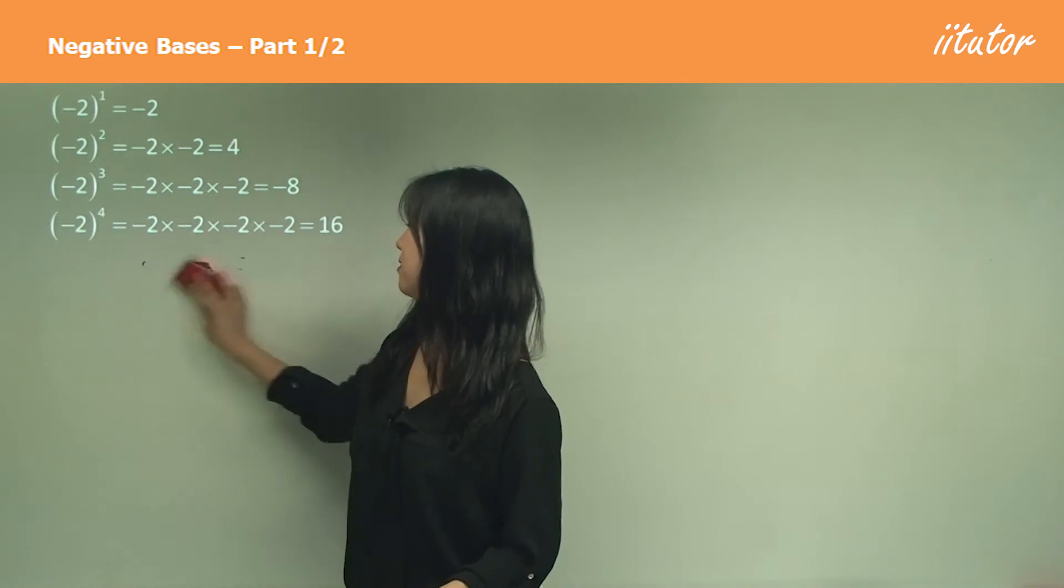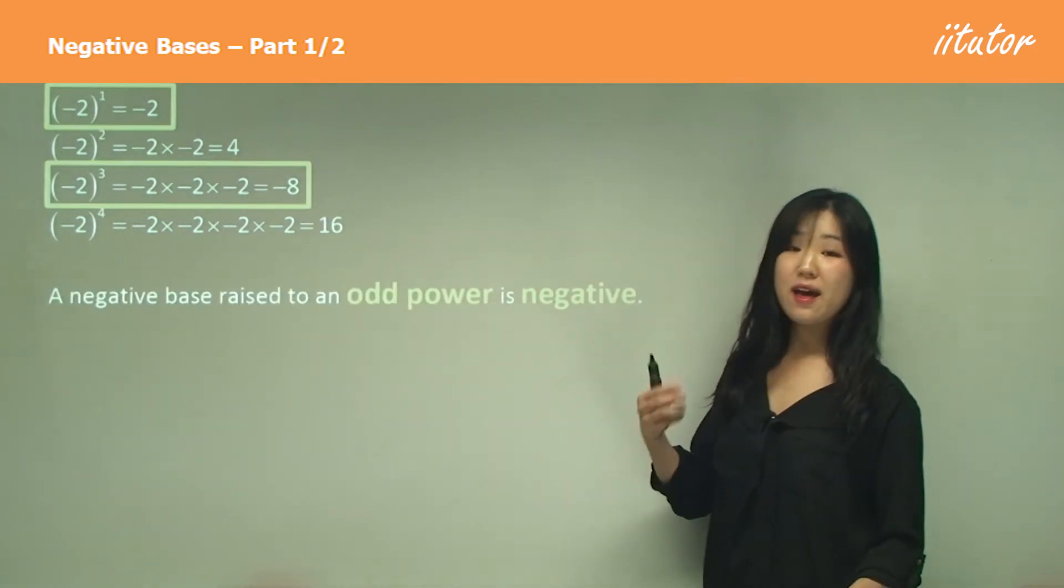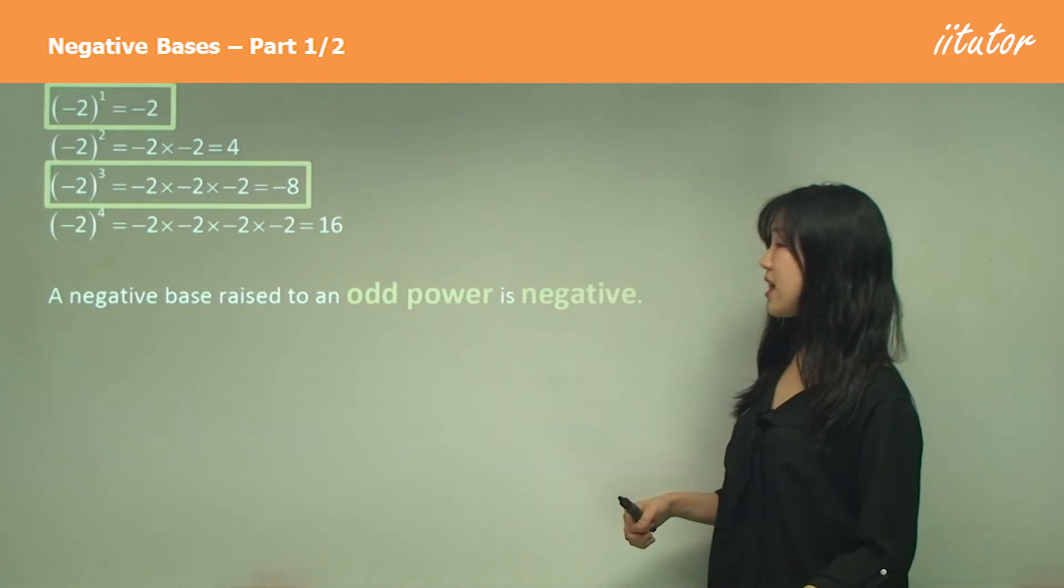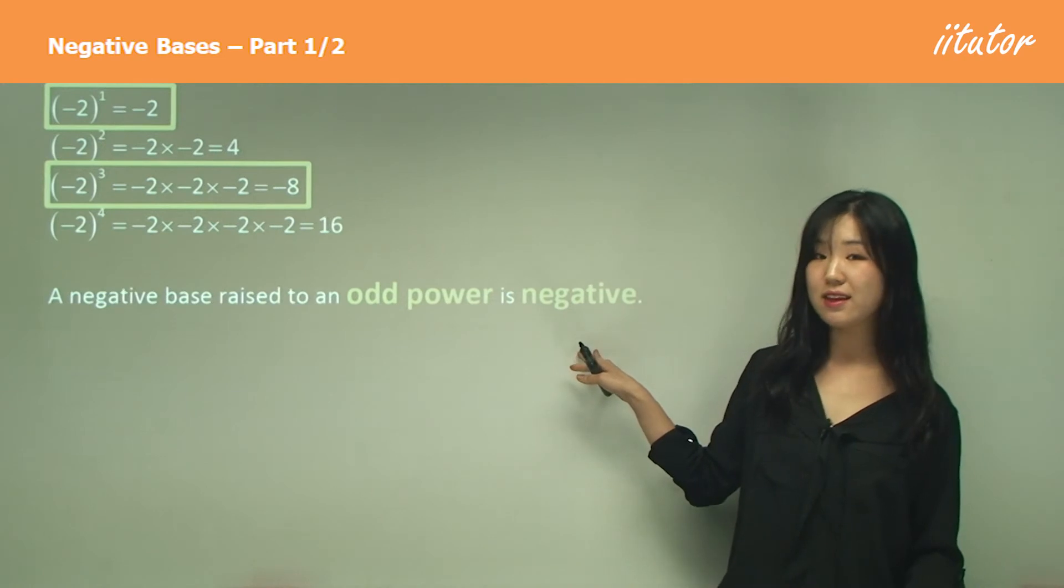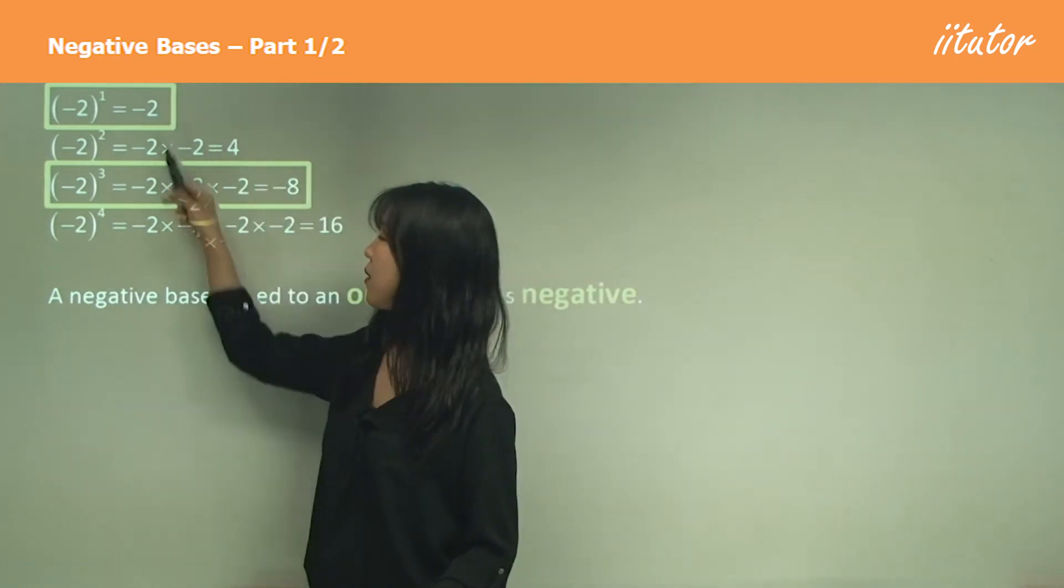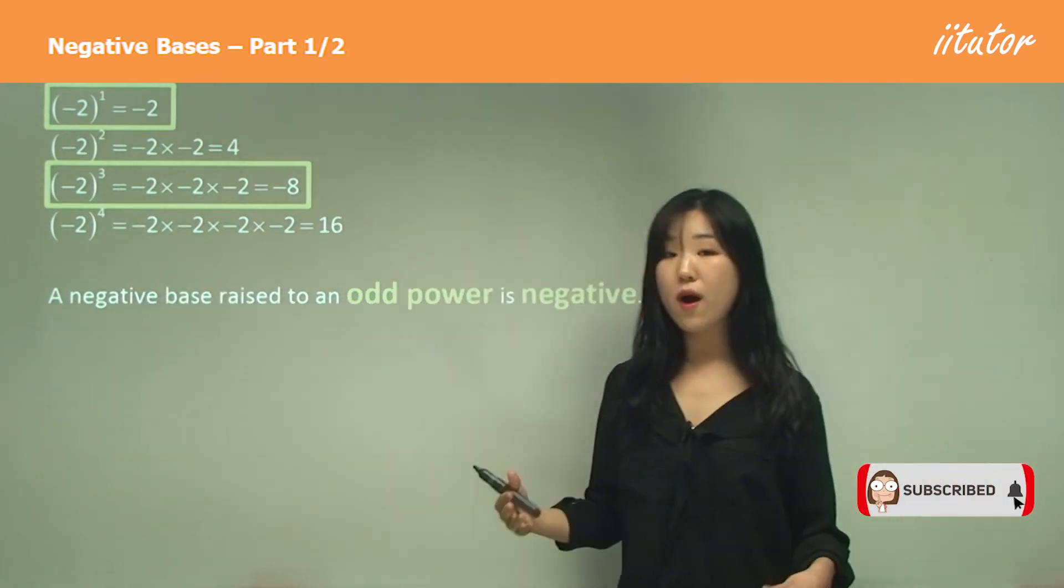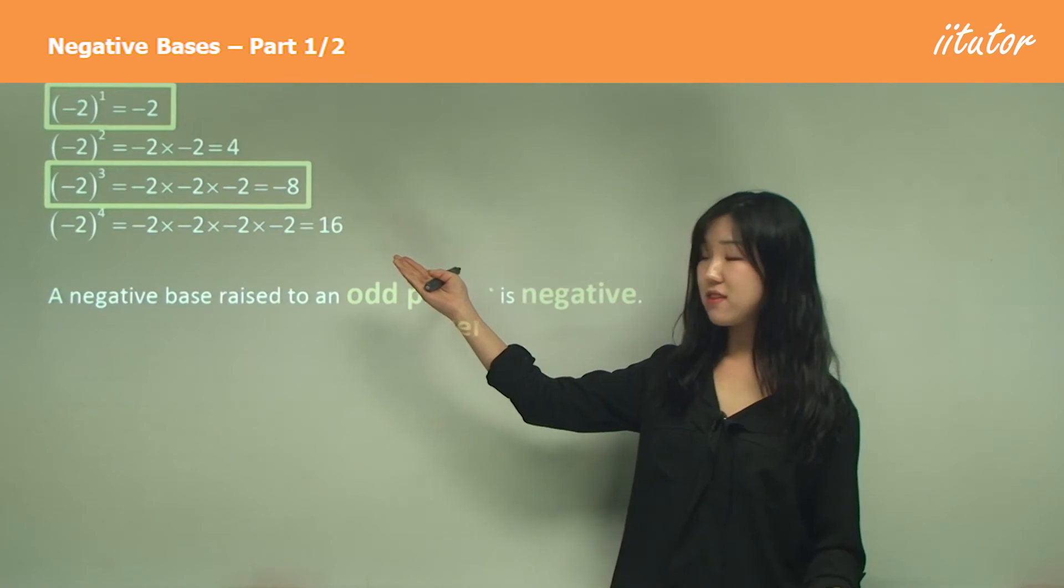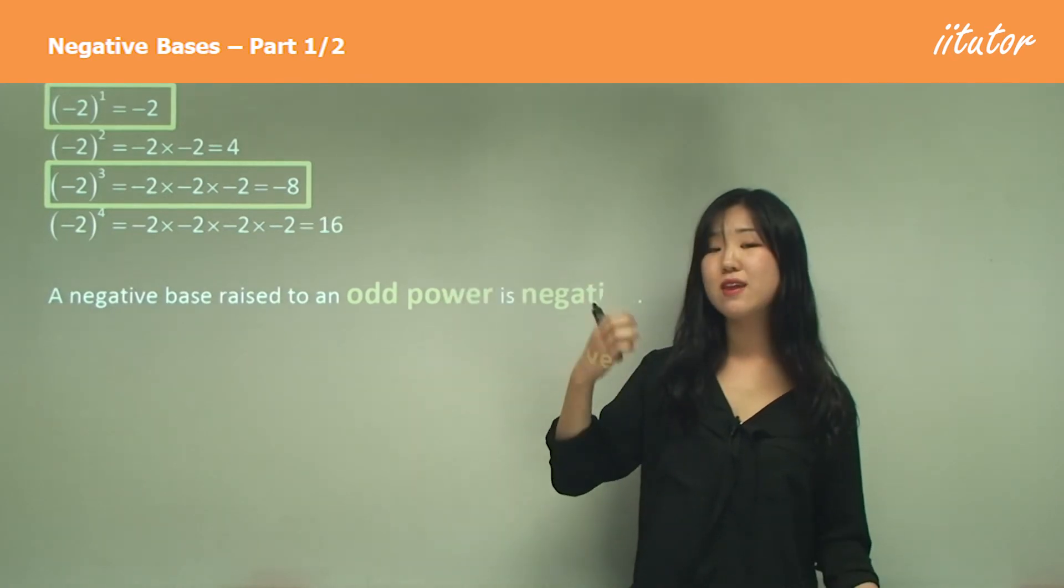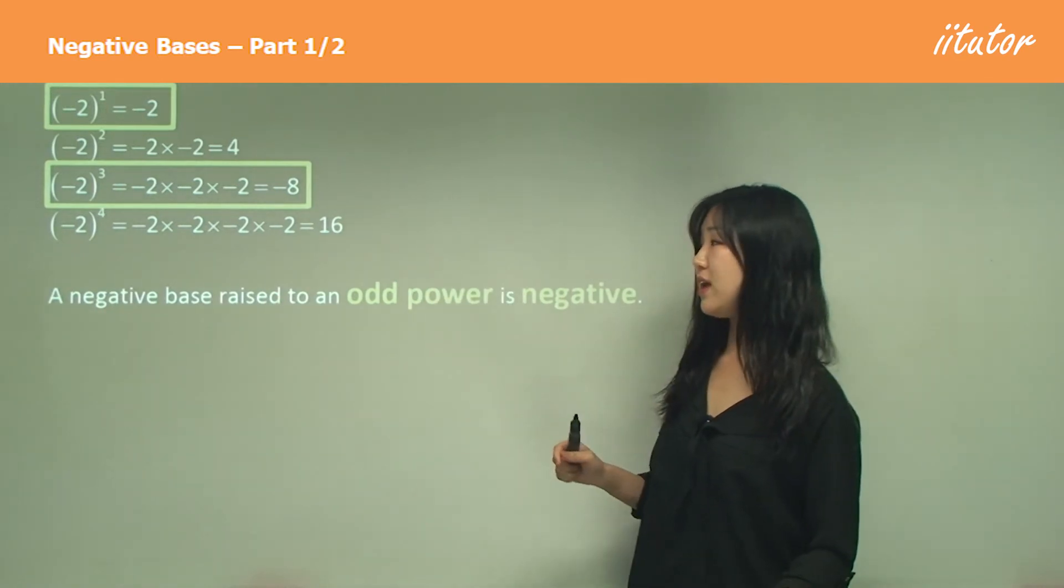Can you kind of see the pattern? If you want to explore the pattern, we can see that the powers that are odd. A negative base raised to an odd power is clearly negative. See how these two ones, the power is 1 here and the power is 3 here. 1 and 3 are odd numbers. If the base is negative, like negative 2, the whole thing to the power of an odd number, the outcome also becomes negative. That's the key point here.